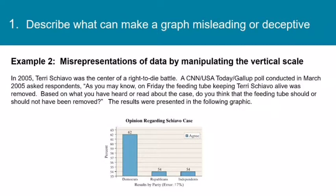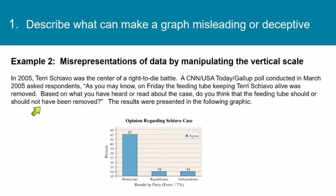Here's another example. In 2005, Terry Schiavo was the center of a right-to-die battle. A CNN USA Today Gallup poll conducted in March 2005 asked respondents: "As you may know, on Friday, the feeding tube keeping Terry Schiavo alive was removed. Based on what you have heard or read about the case, do you think that the feeding tube should or should not have been removed?" The results were presented in the following graphic.